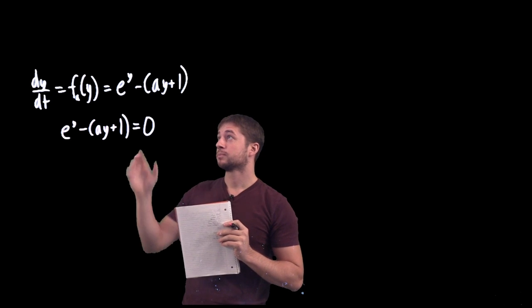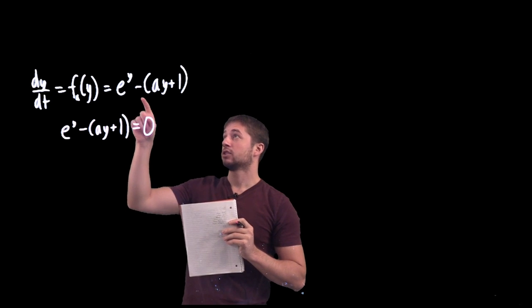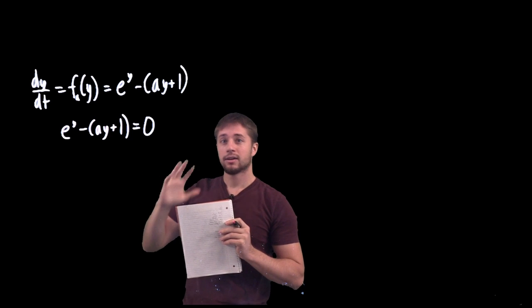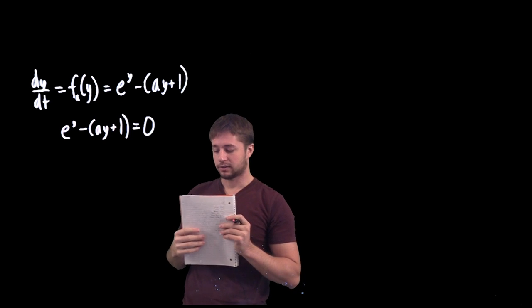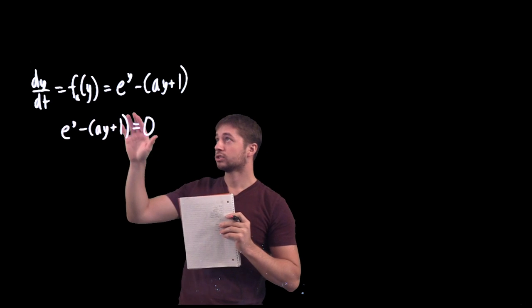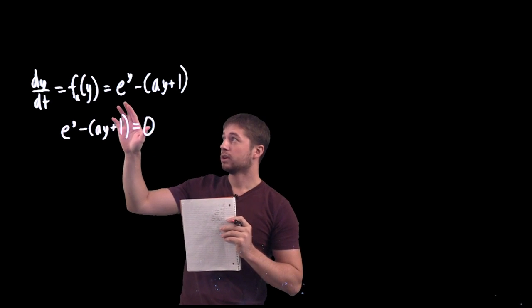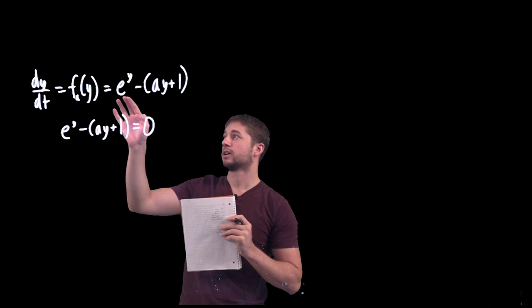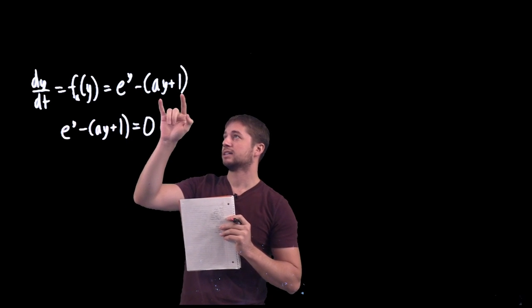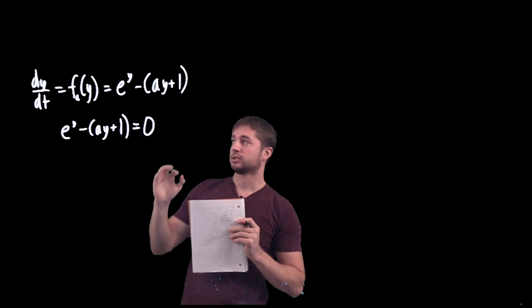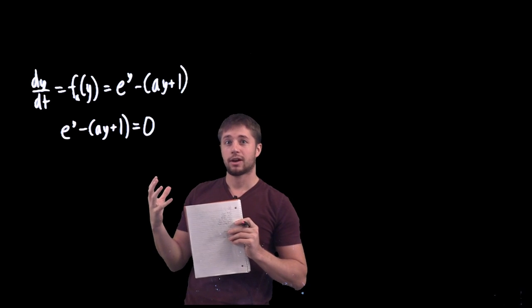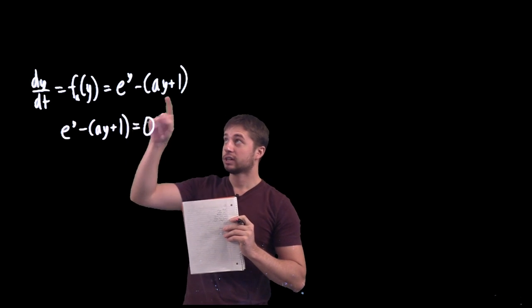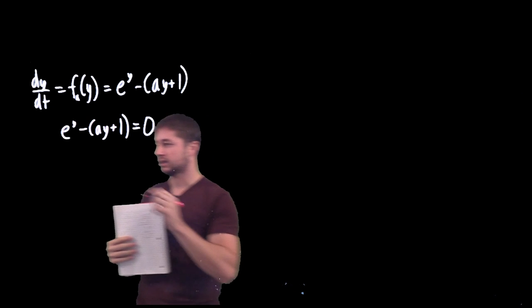So what we're going to try and do is graph f_a(y) for different values of a. What we notice here is that this is a difference of two functions — e^y and ay+1 — that by themselves we could graph easily. So I'm actually going to graph these separately on the same axis.